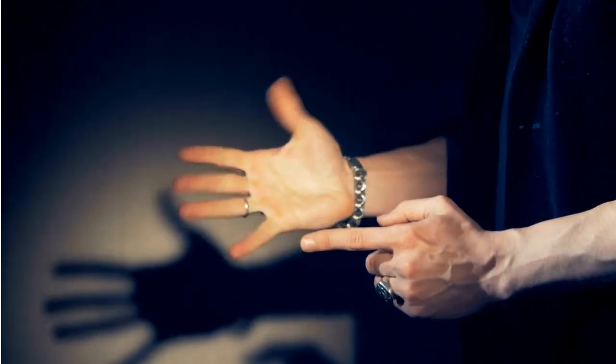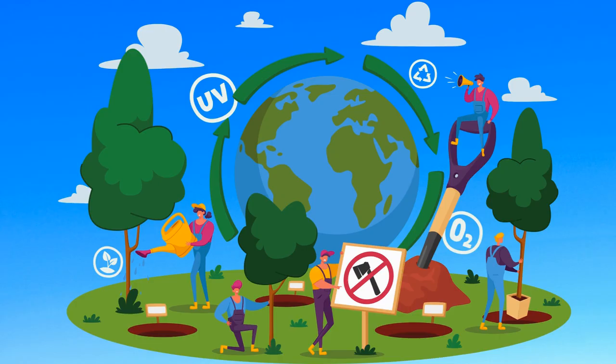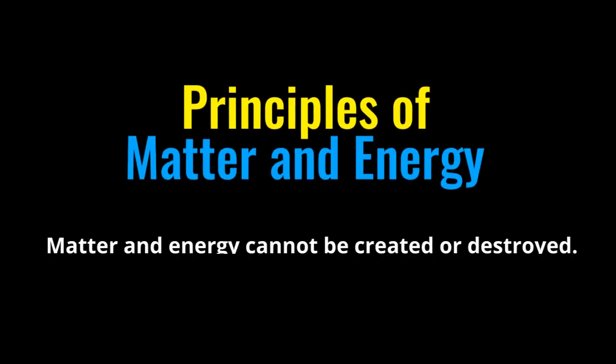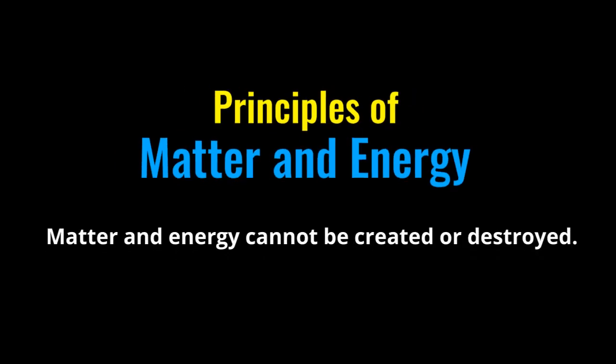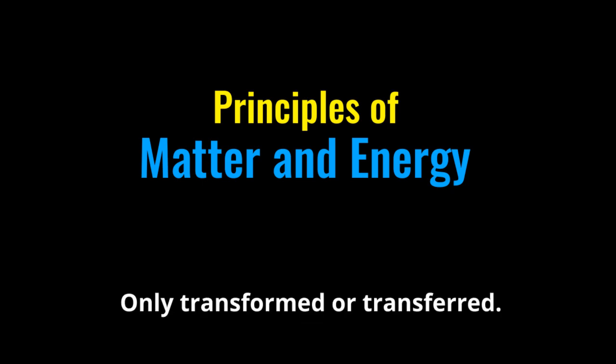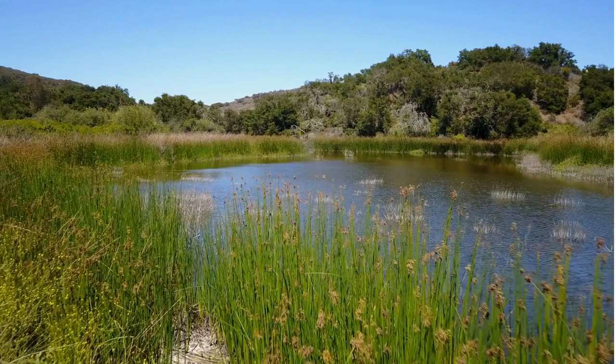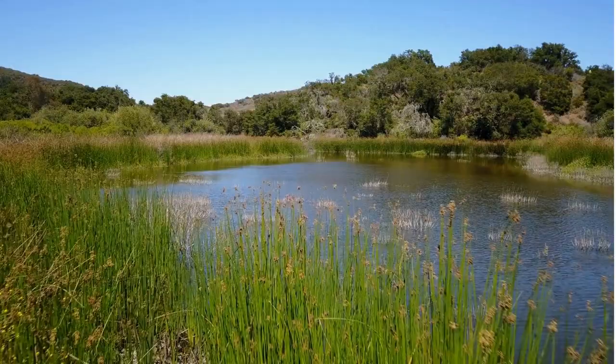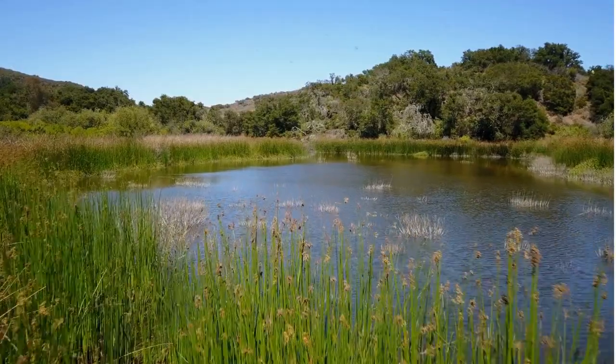This is very much like the principles of conservation of matter and energy, which state that matter and energy can't be created or destroyed, only transformed or transferred. So, how does this magic work in an ecosystem?